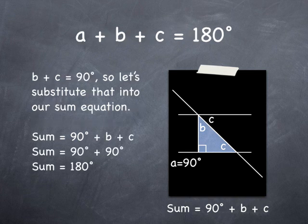A is 90 degrees because it's a right triangle. B and C together make 90 degrees as we just saw. Therefore, A plus B plus C is 90 plus 90, which is 180 degrees.